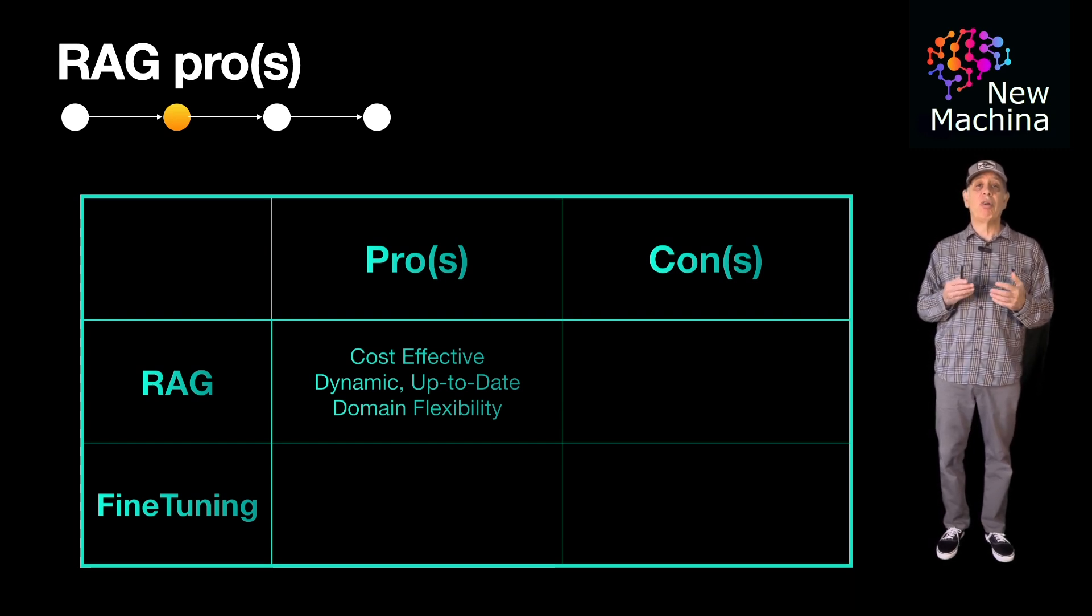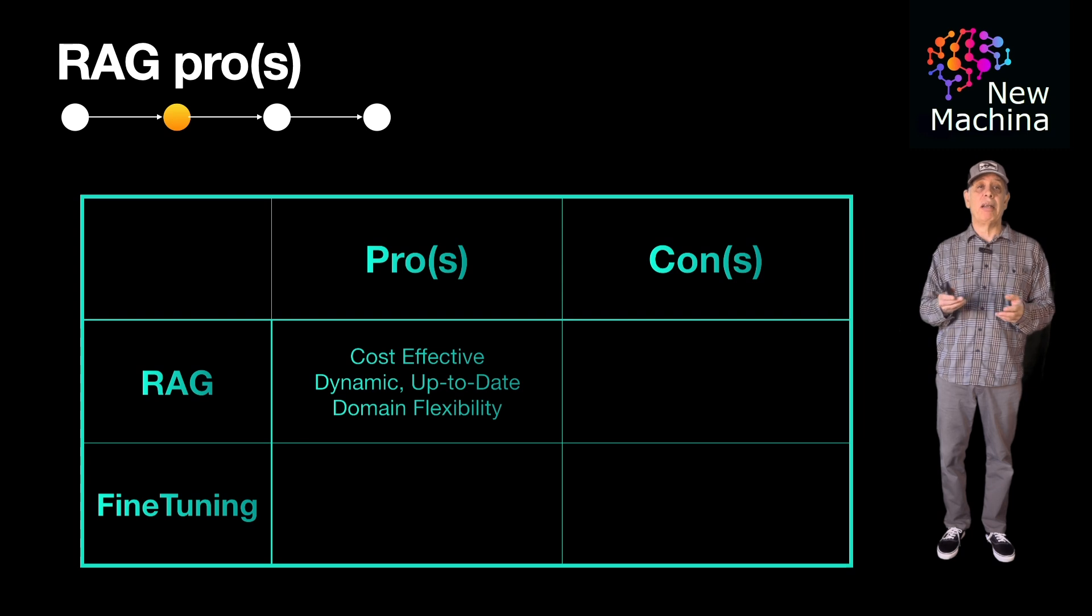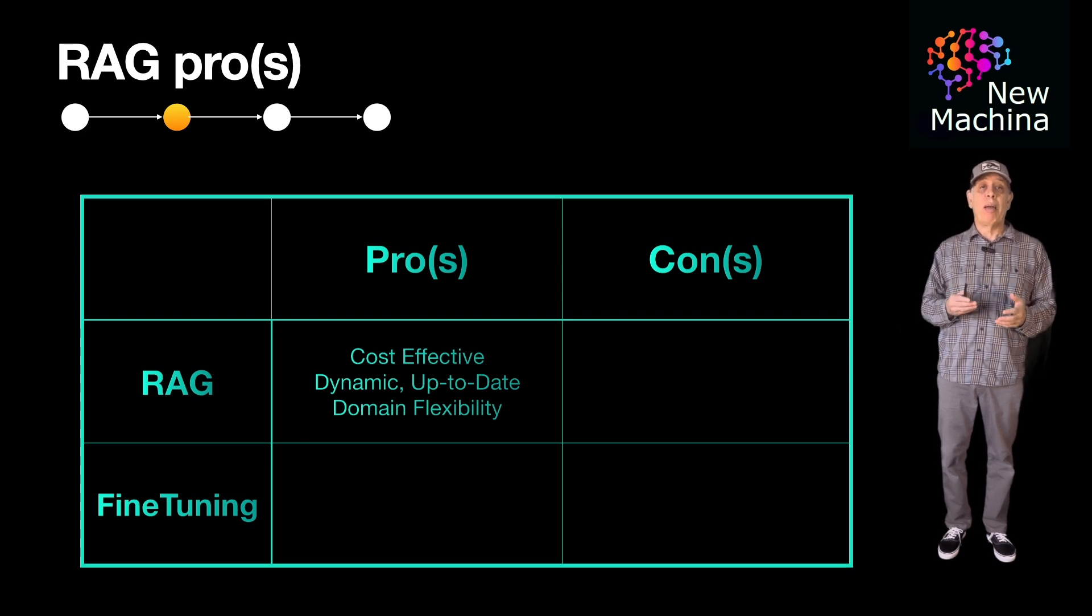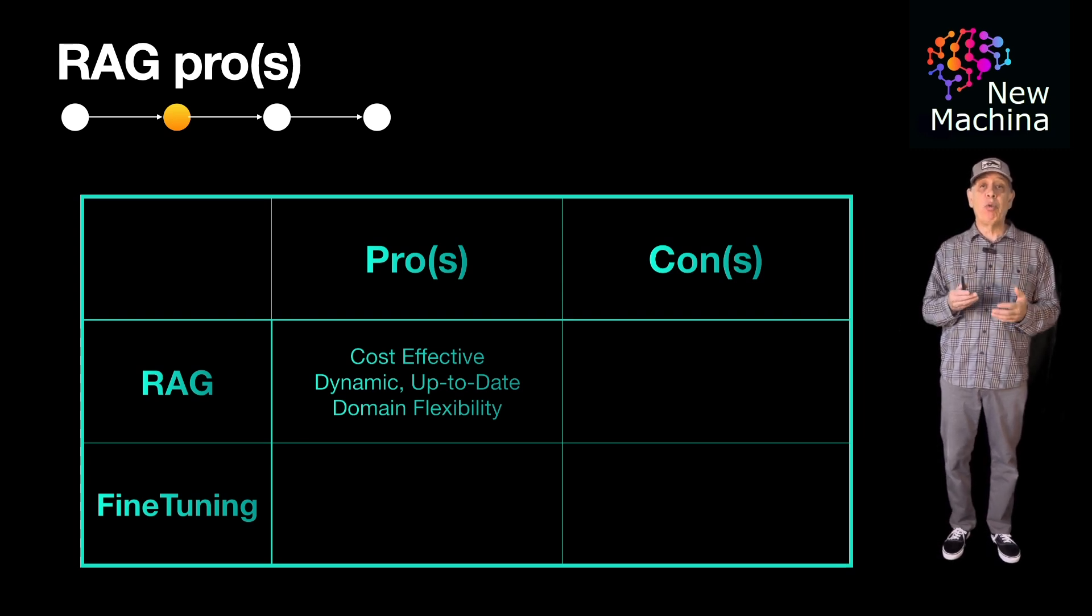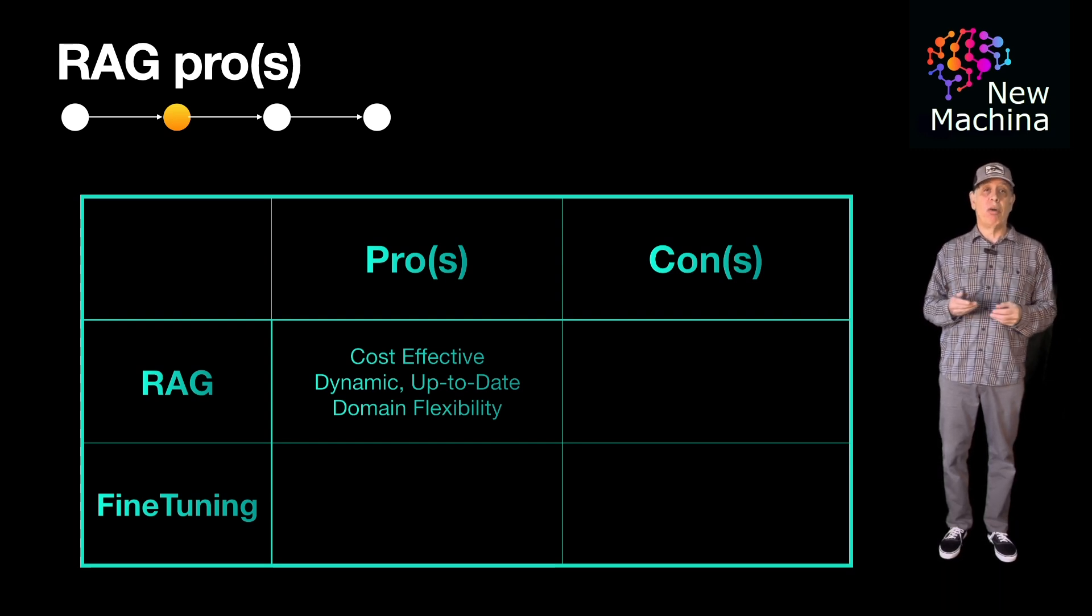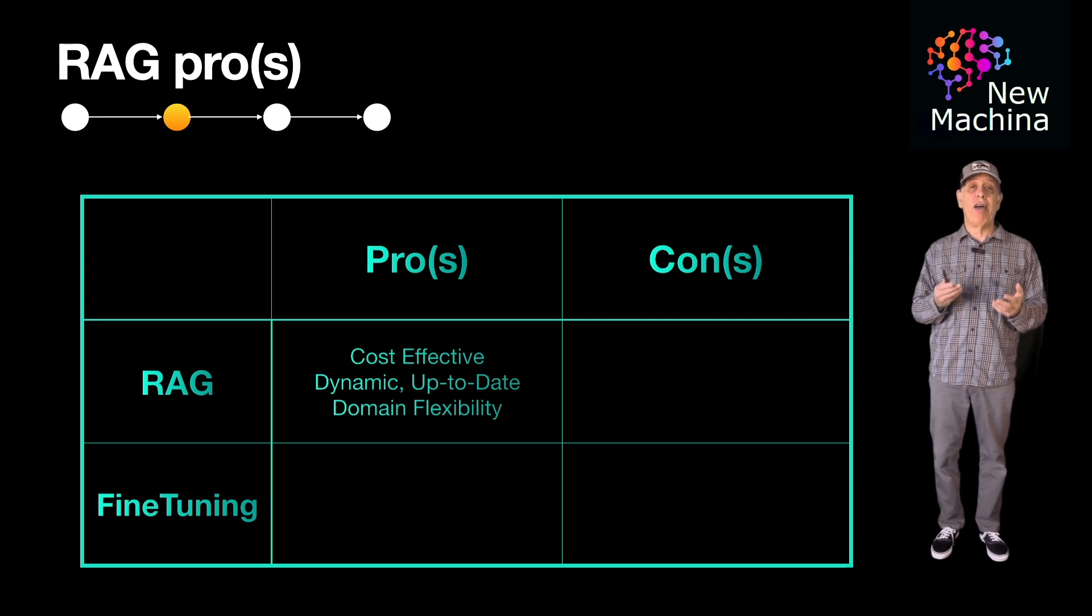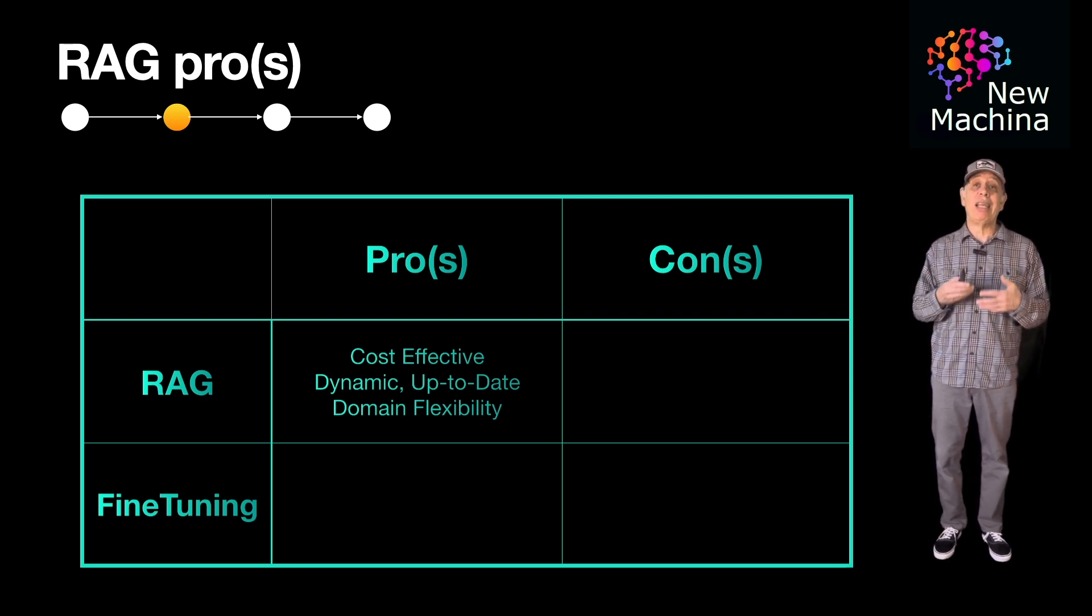The second is that the LLM-driven system is dynamic and up-to-date. RAG enables the LLM to access real-time or frequently updated data. The third is domain flexibility. RAG systems are effective across various domains without requiring retraining each time.